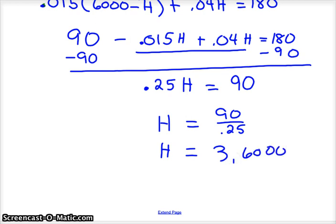So $3,600. And so that means your low risk is going to be $6,000 minus that or $2,400.